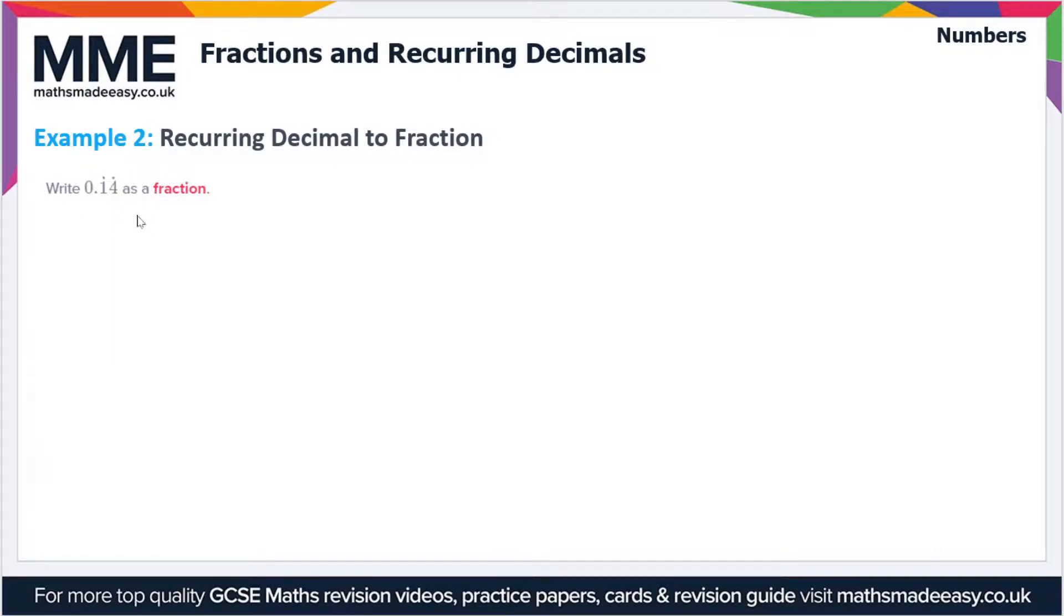This first one is 0.14 recurring. We have to write that as a fraction. So 0.14 recurring, let's call that x. Then if we times both sides of this expression by 100, we get 14.14 recurring is equal to 100x.